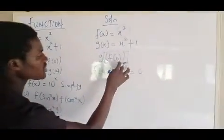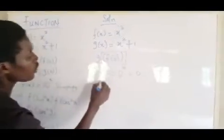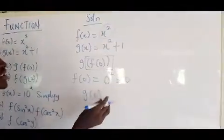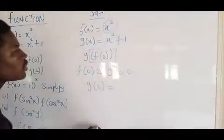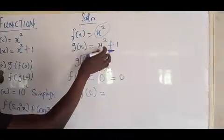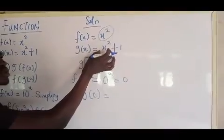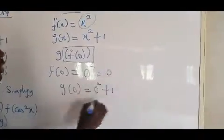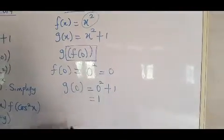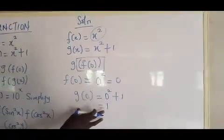So now your g(f(0)) will now be g(0). Because now your f(0) is 0. So now do your g(0). Your g(0) simply means anywhere in g(x) you put 0. So that will be 0 squared plus 1 and that will be 1. So your g(0) is 1.